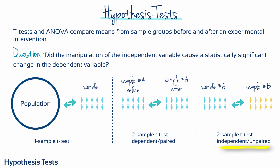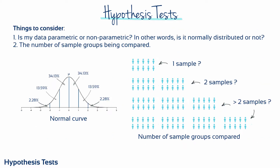Or it could be a comparison between two distinct sample groups. There are distinct types of t-tests for those three situations with different underlying mathematics: the one-sample t-test, the dependent t-test (also known as a paired t-test), and lastly the independent t-test, also known as the unpaired test.